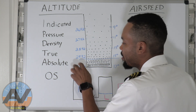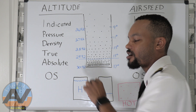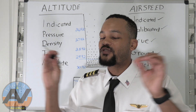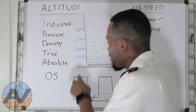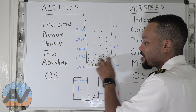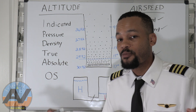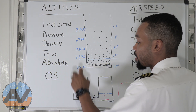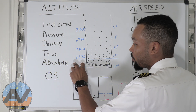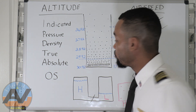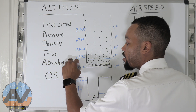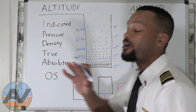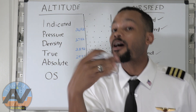What is the standard datum plane? On a perfectly standard day — 29.92 inches of mercury and 15 degrees Celsius at sea level — that is the standard datum plane. Now if a high pressure system moves in, we might actually be below that plane, or if a low pressure system moves in with hot and humid conditions, our pressure system is going to be above it.